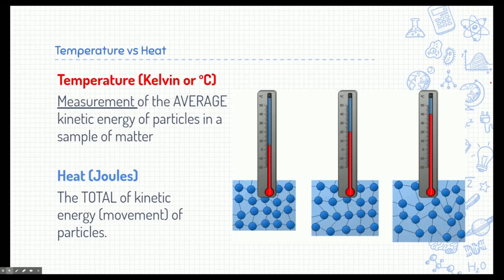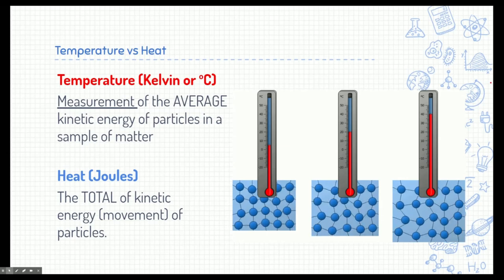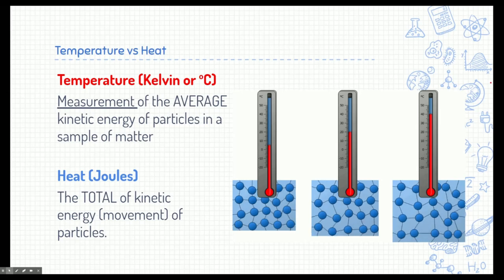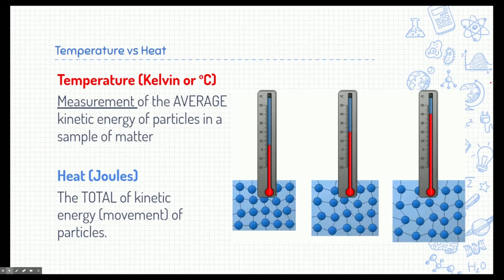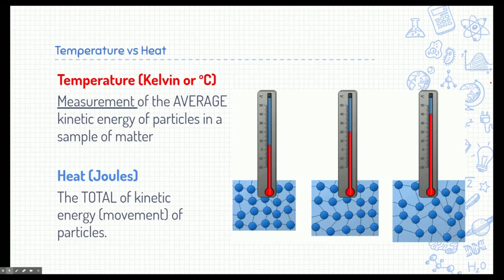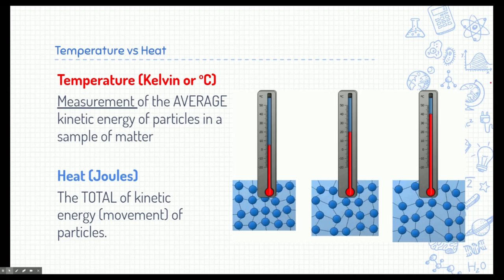Let's talk a little bit about temperature versus heat — they're two different things that we sometimes use interchangeably and really shouldn't. Temperature is a measurement, typically in Kelvin or Celsius in science, and it measures the average kinetic energy of the particles in a sample of matter. Heat is a little bit different. Heat is measured in joules — it's the total kinetic energy, or the total movement of the particles.